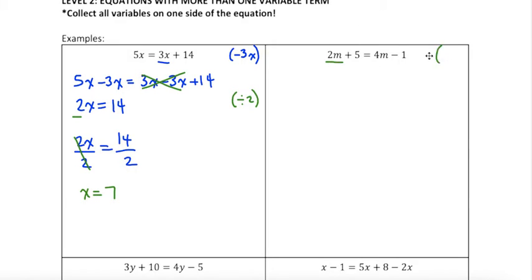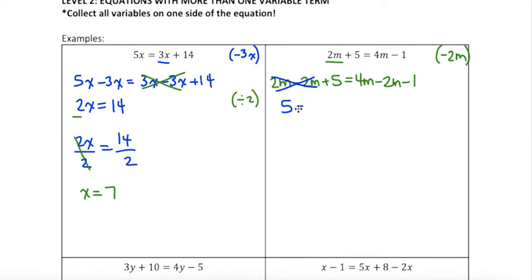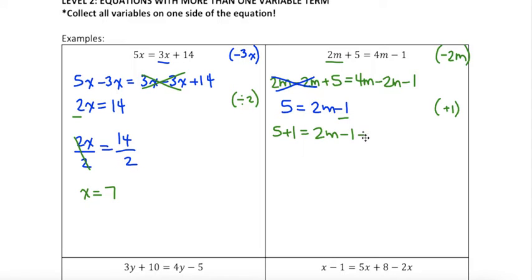So I'm going to take my 2m. The opposite of this positive 2m is subtracting 2m, so I do that to both sides. 2m take away 2m plus 5 equals 4m take away 2m minus 1. 2m take away 2m is 0, so I'm left with 5 on the left-hand side. 4m take away 2m is 2m minus 1. Now I want to eliminate the constant on the same side as my variable. The opposite of minus 1 is adding 1 to both sides, so 5 plus 1 equals 2m minus 1 plus 1, giving me 6 equals 2m.